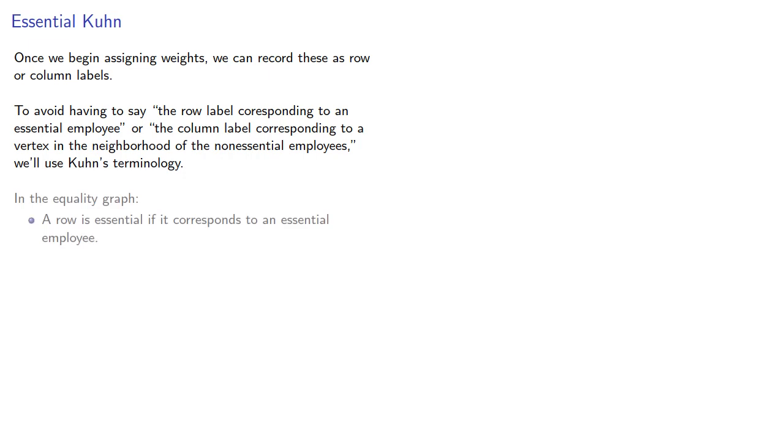In the equality graph, a row is essential if it corresponds to an essential employee. A column is essential if it corresponds to a task done by a non-essential employee.